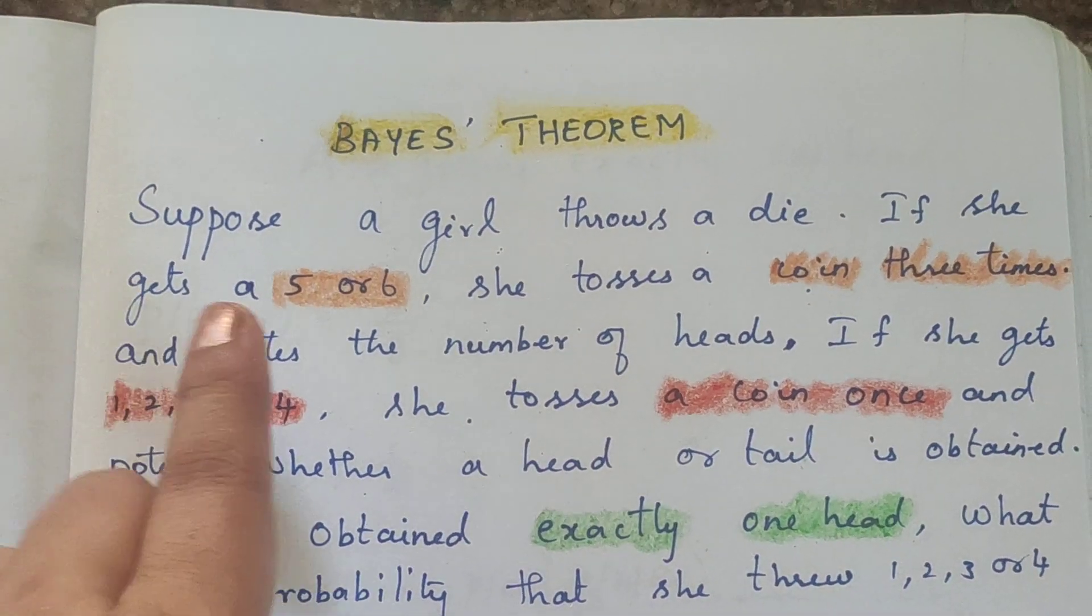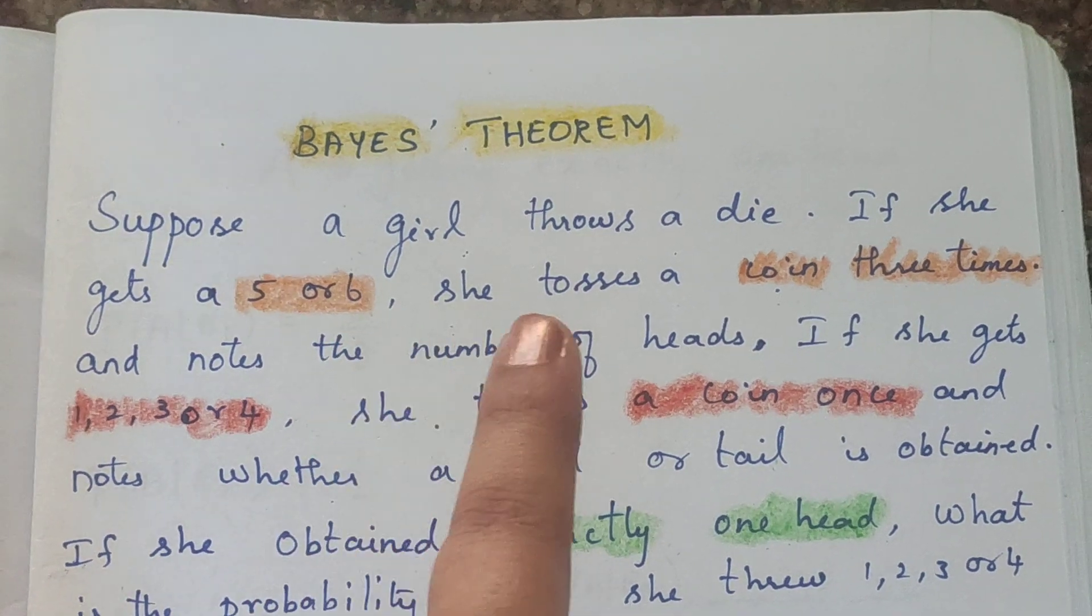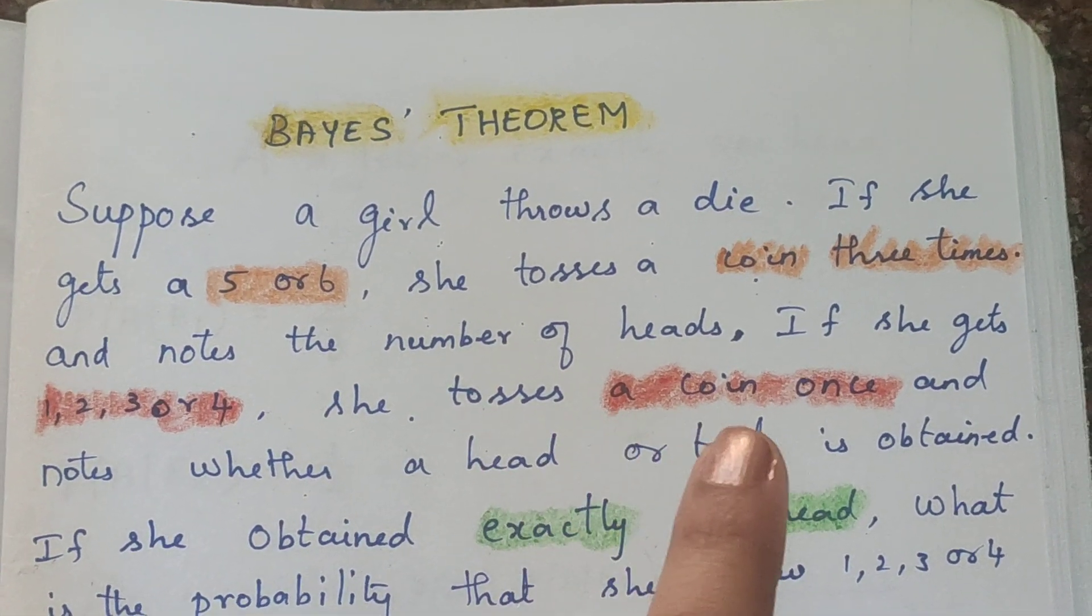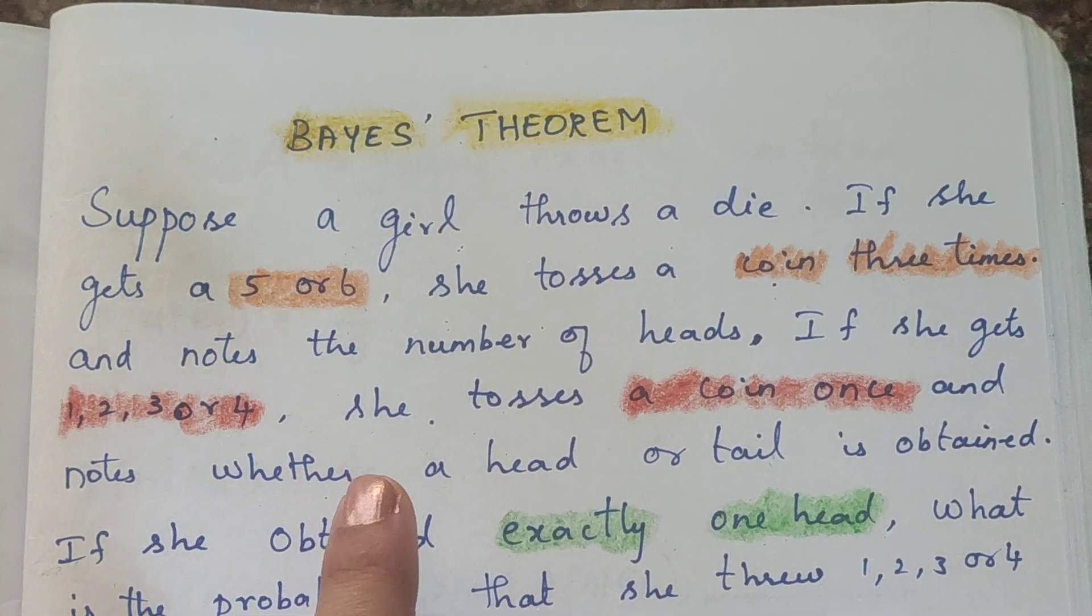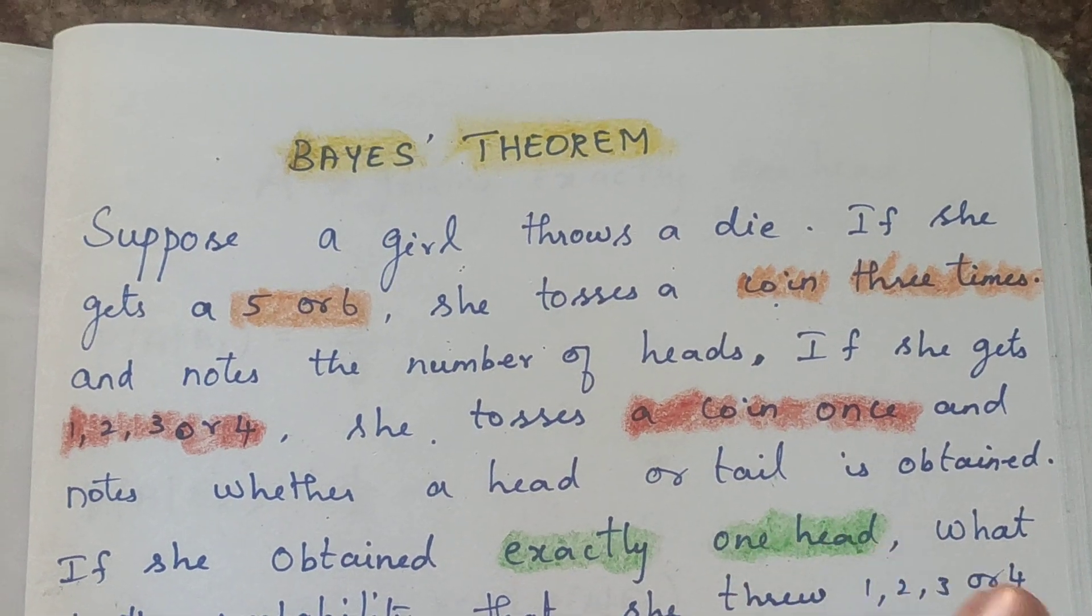The situation is: suppose a girl throws a die. If she gets 5 or 6, she tosses a coin 3 times and notes the number of heads. If she gets 1, 2, 3, or 4, she tosses a coin once and notes whether a head or tail is obtained.